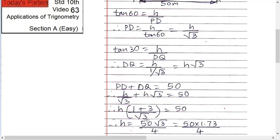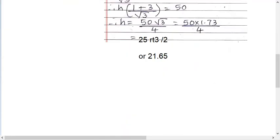Now tan 30 is what? h upon DQ. So DQ is what? h upon tan 30, that is 1 by root 3. So root 3 comes up. DQ equals to h root 3.